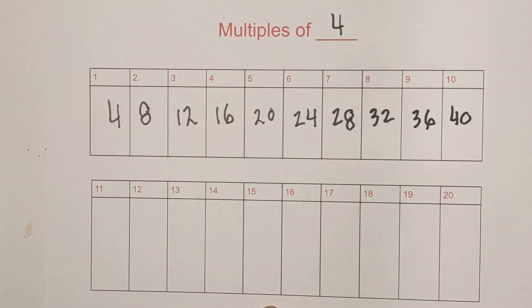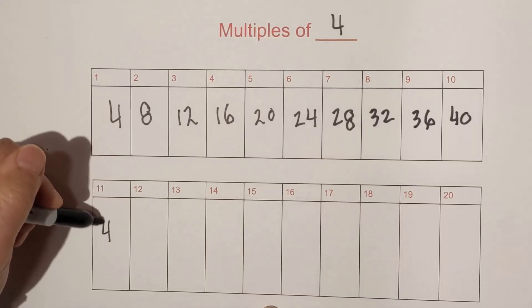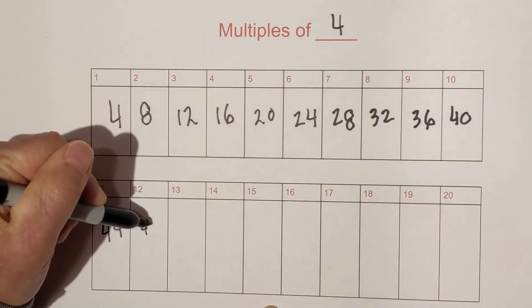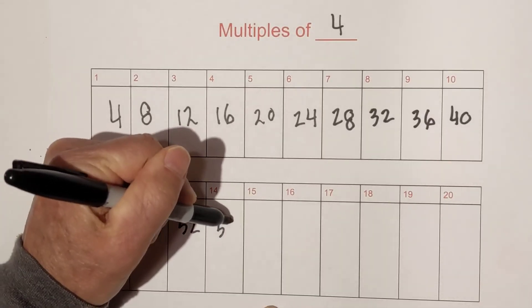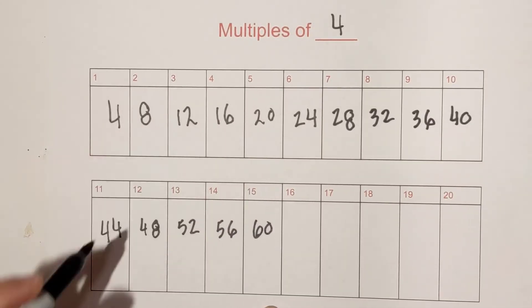So now let's move down to eleven and this pattern kind of repeats itself. So eleven times four is forty-four, then we have forty-eight, then we have fifty-two, fifty-six.